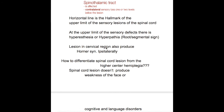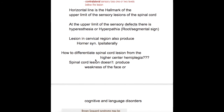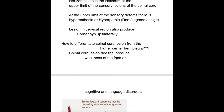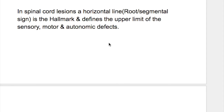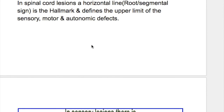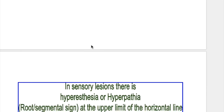A lesion of the cervical region also produces Horner's syndrome ipsilaterally. How do we differentiate a spinal cord lesion from higher center hemiplegia? Spinal cord lesions do not produce weakness of the face or cognitive and language disorders. In spinal cord lesions, the horizontal line is the hallmark and defines the upper limit of the sensory, motor, and autonomic defects.